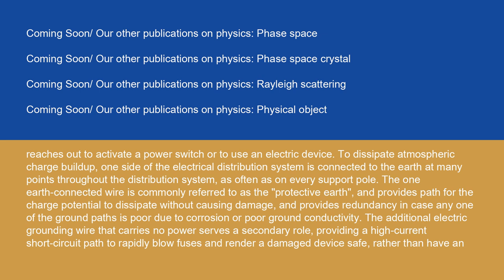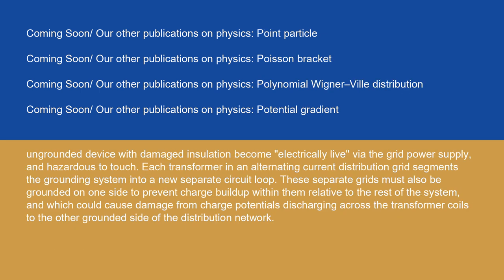The additional electric grounding wire that carries no power serves a secondary role, providing a high-current short-circuit path to rapidly blow fuses and render a damaged device safe, rather than having an ungrounded device with damaged insulation become electrically live via the grid power supply and hazardous to touch. Each transformer in an alternating current distribution grid segments the grounding system into a new separate circuit loop. These separate grids must also be grounded on one side to prevent charge buildup within them relative to the rest of the system, which could cause damage from charge potentials discharging across the transformer coils to the other grounded side of the distribution network.